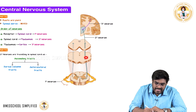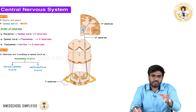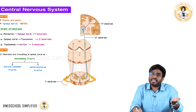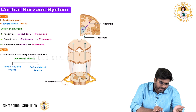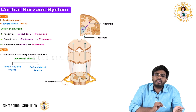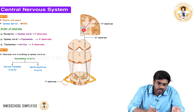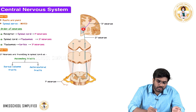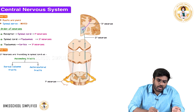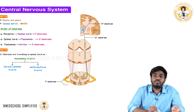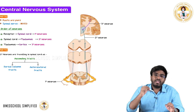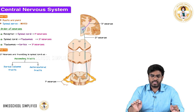This group of axons traveling upward can be called ascending tracts. The second-order neurons travel in the spinal cord as ascending tracts and terminate in the thalamus. From the thalamus, the third-order neurons start and take the information to the cortex — specifically, the somatosensory cortex.